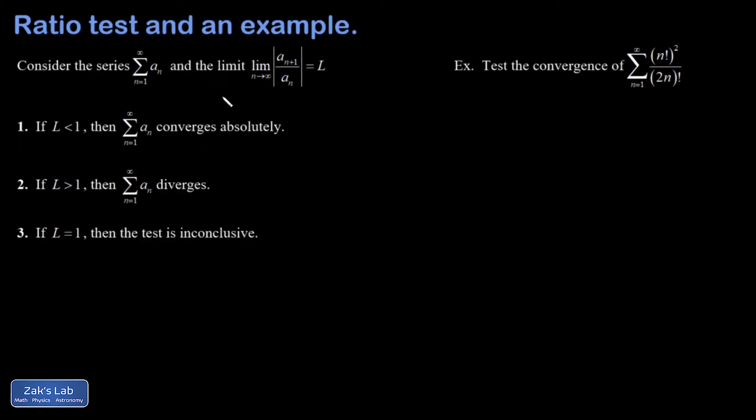Here's how the test goes. You look at the ratio of the next term to the previous term, so a_{n+1} divided by a_n. You take the absolute value of that and then the large n limit of it, and you're going to get some limit out of that.